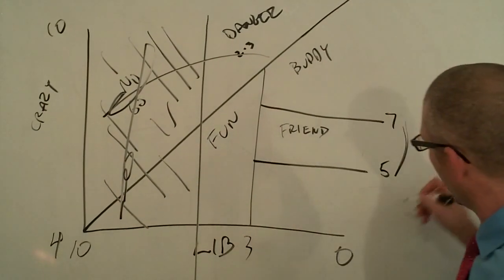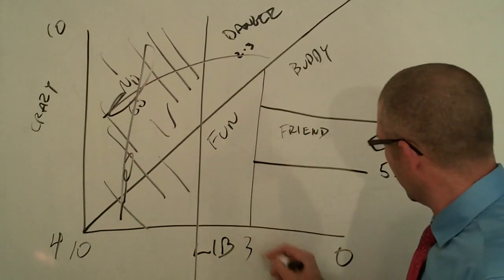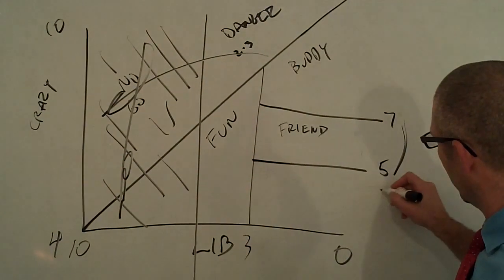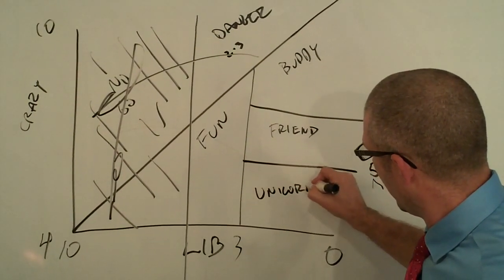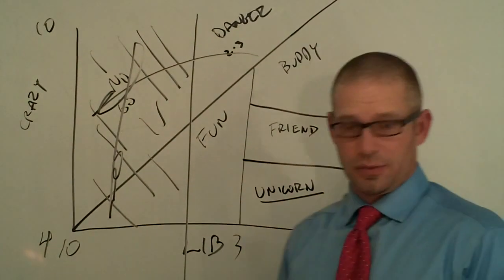Our last little quadrant here, this is below a 3 liberal, below a 5 crazy. This is your unicorn zone. These people do not exist.